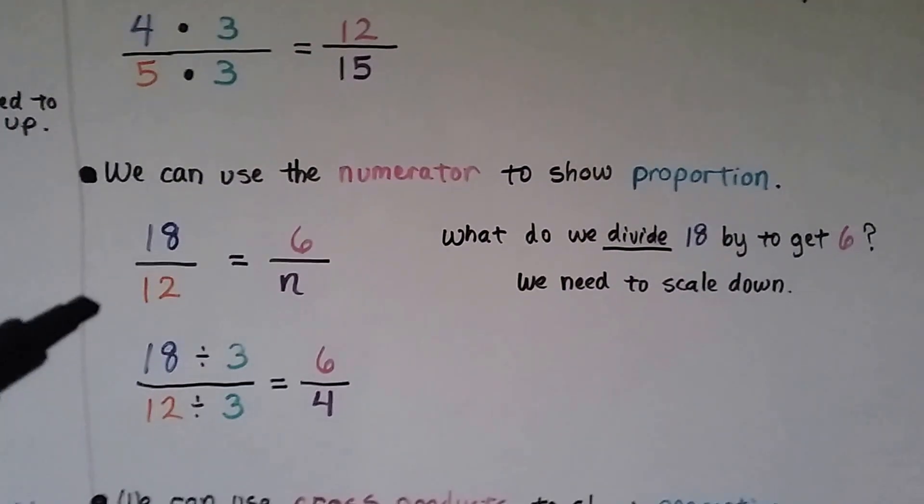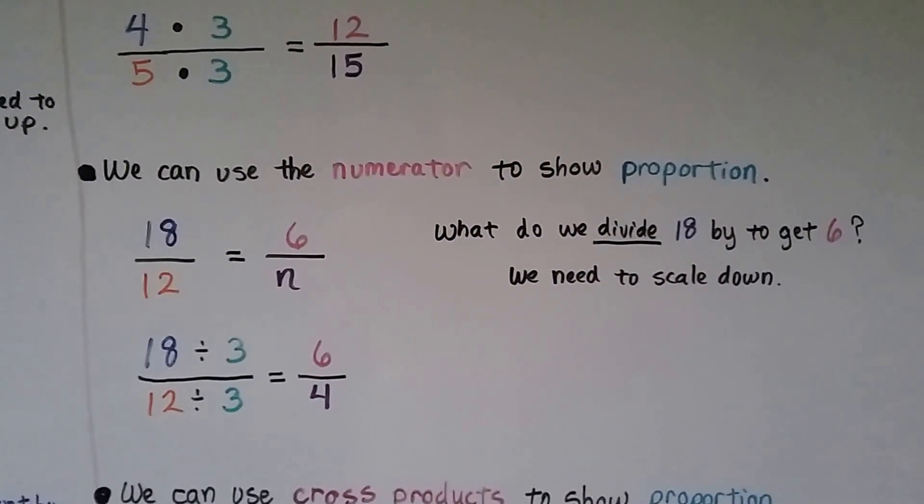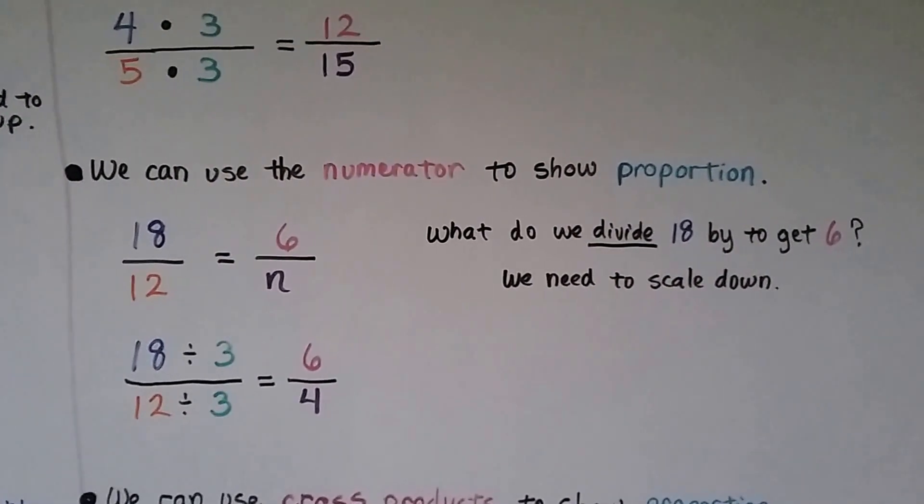Another way is we can use the numerator to show proportion. What do we divide 18 by to get the 6? A 3. So the 12 wants to be divided by 3, so we have 6 fourths.